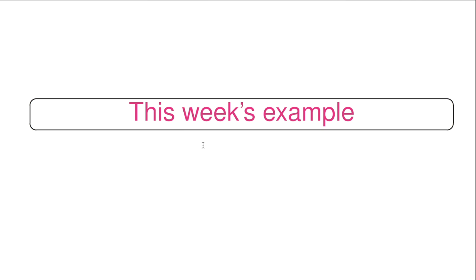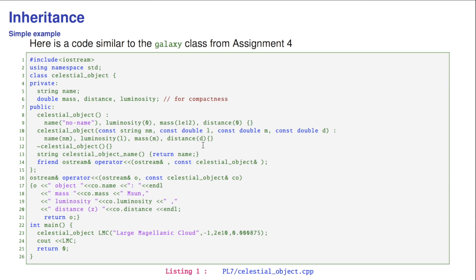Okay, let's start with an example. The example is based on the Galaxy class code, which we used in Assignment 4, but in a slightly different way. So we look at the most general object we can see in the sky. Let me call it the celestial object, which maybe has a name, it will have a mass, a distance, and in principle a luminosity. And then we can create an object like that in the standard way. And we also have a parameterized constructor, which actually constructs the object based on the arguments and initializes all the entries in our class.